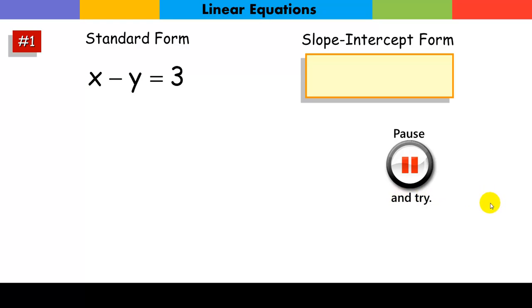Take a second and go ahead and convert that x minus y equals 3 into slope-intercept form.